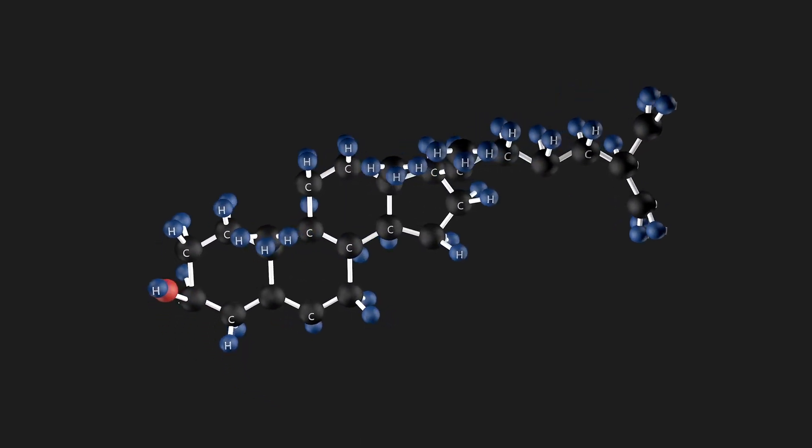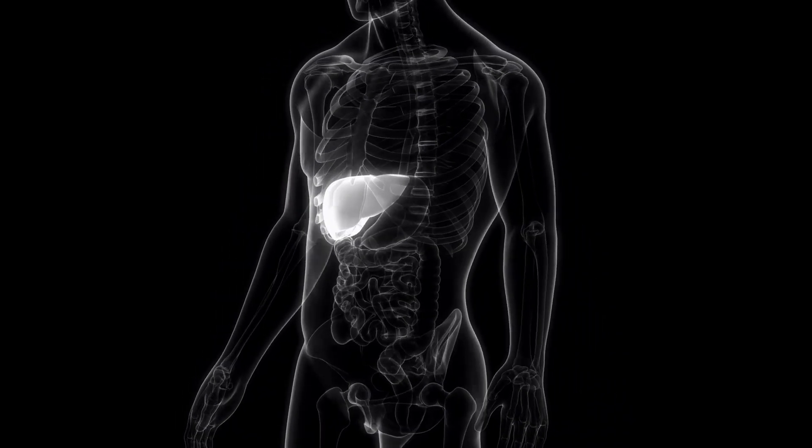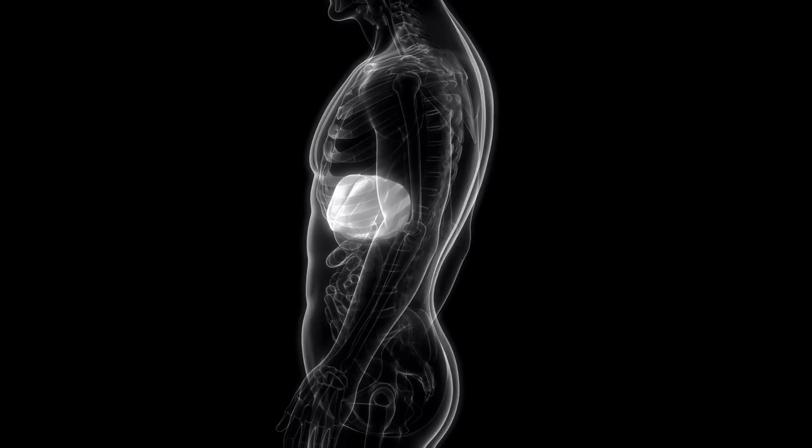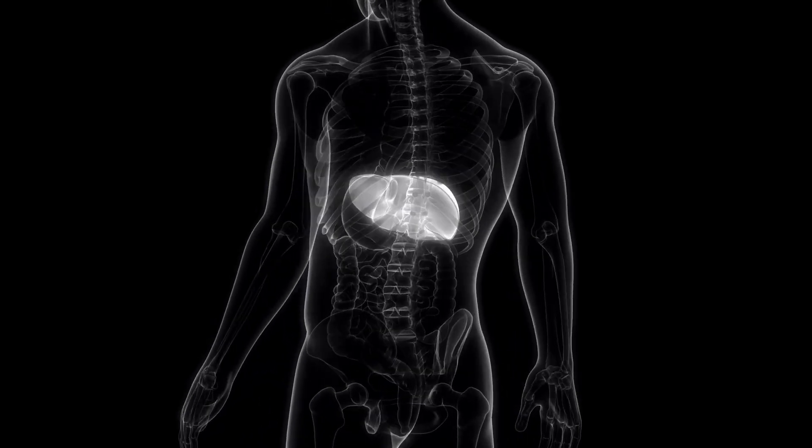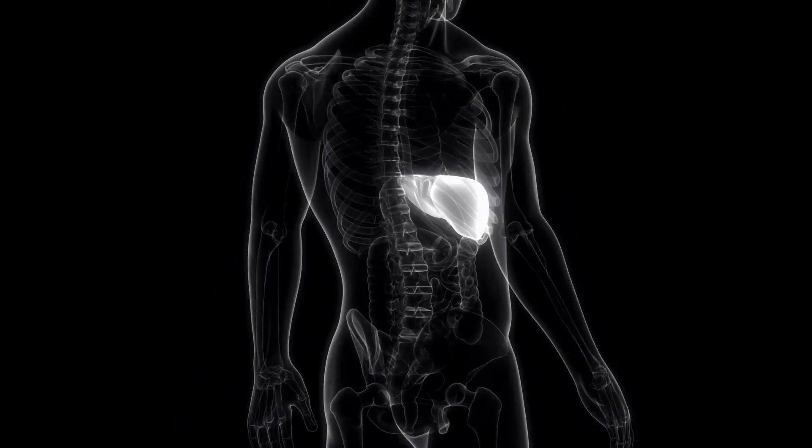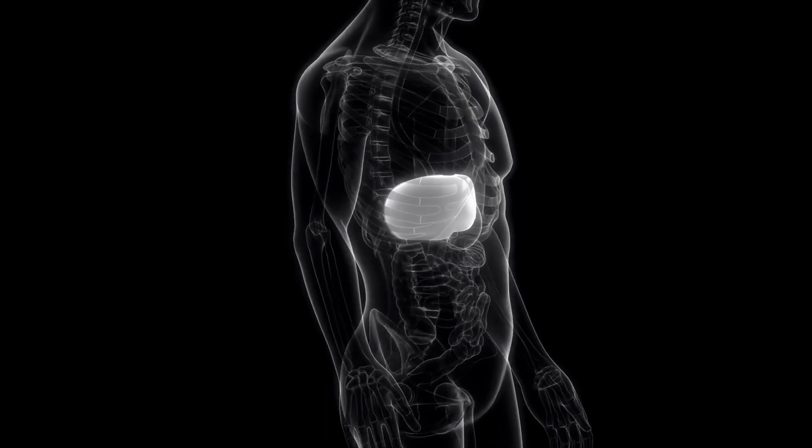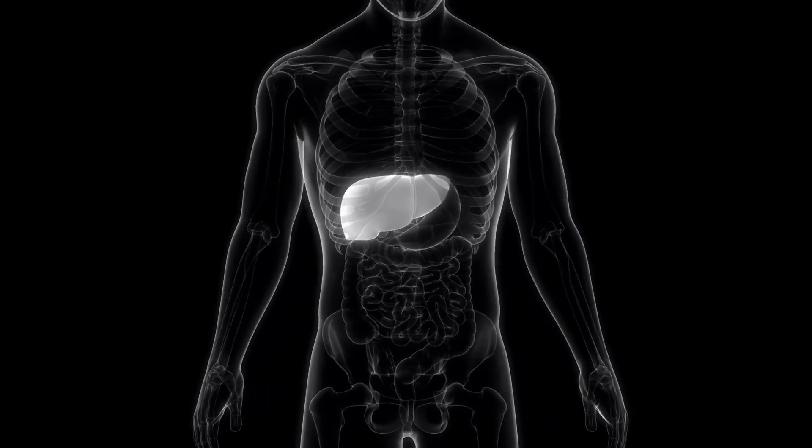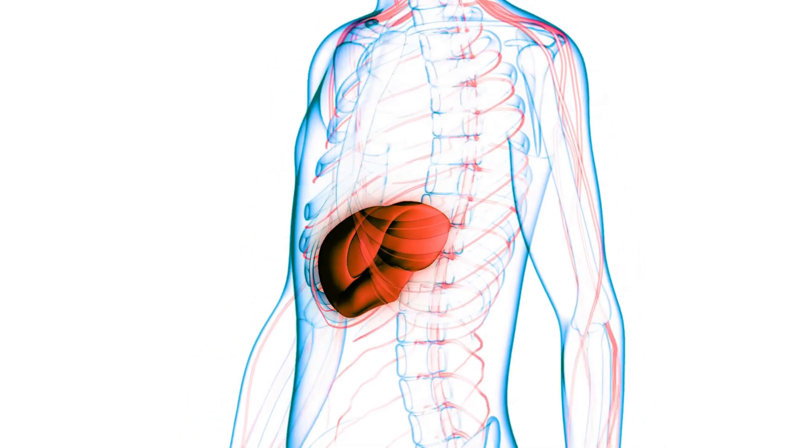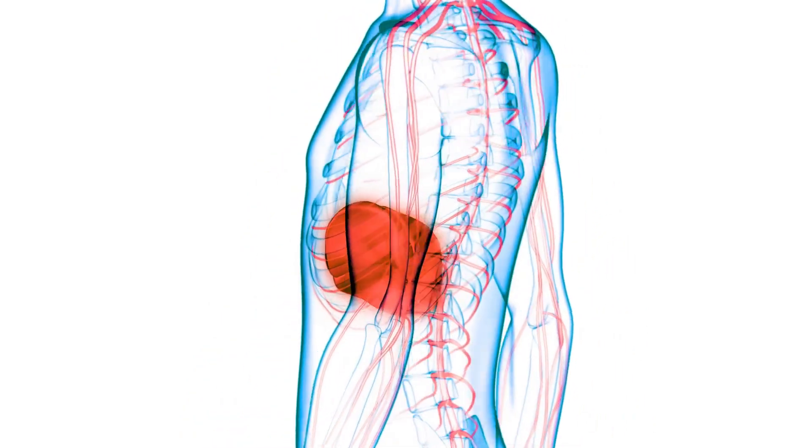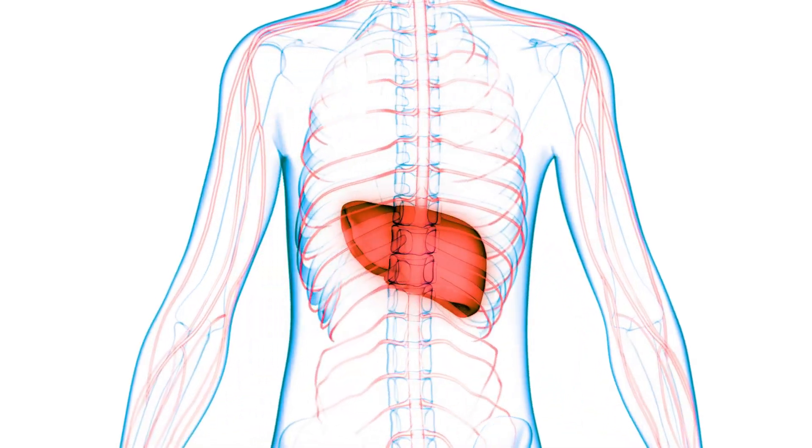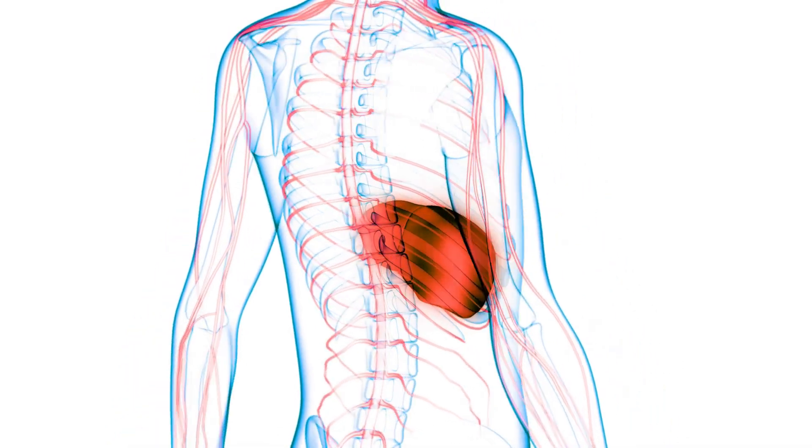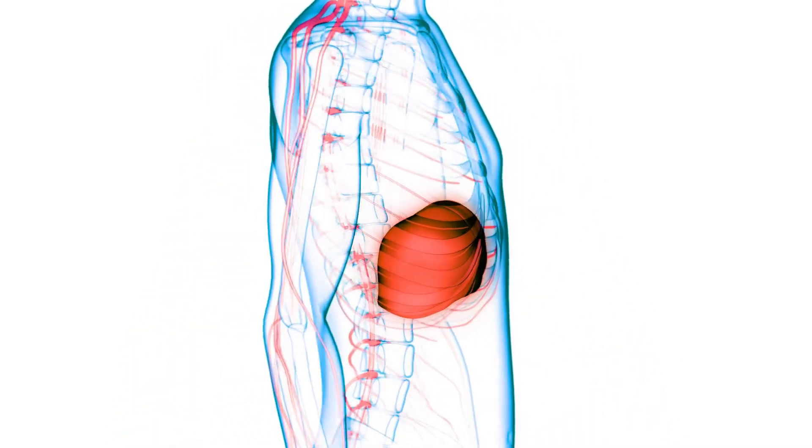In addition to lipid synthesis, the smooth ER plays a crucial role in detoxification. It contains enzymes that modify and detoxify a variety of harmful substances, including drugs, alcohol and metabolic by-products. This detoxification process often involves adding hydroxyl groups to the toxic molecules, making them more water-soluble and easier to excrete from the body.